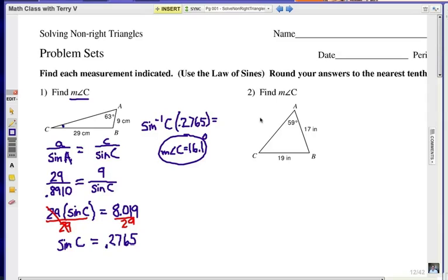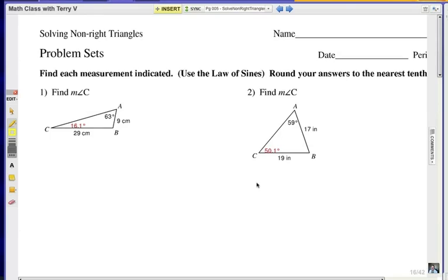Now, I'd like you to try number 2. Notice that you're going to use the law of sines and give that a try. We're looking for angle C. Hopefully you've got 50.1 degrees. Let's kind of break it down and see how we get that.